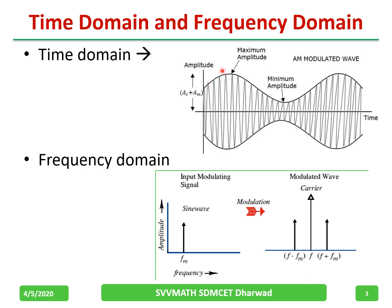All of you know the amplitude modulated waveform, shown in the slide. This is the time domain — how the amplitude is varying with respect to time, you can observe on the CRO. But in the frequency domain, this signal has different frequencies: a carrier frequency F, plus sidebands F minus FM and F plus FM. These are the three different frequencies present in this signal.